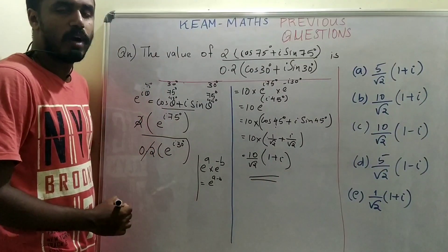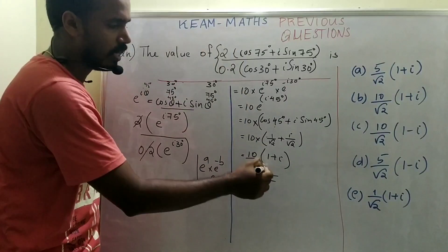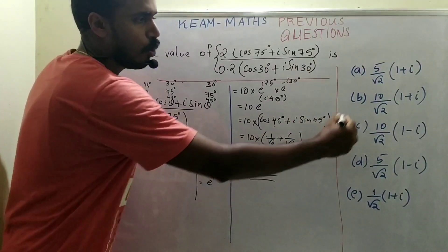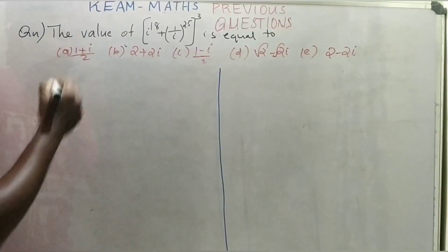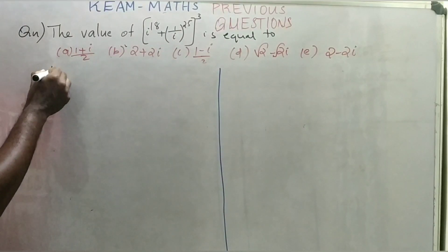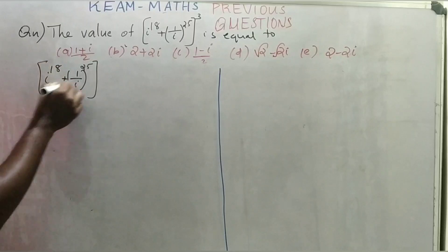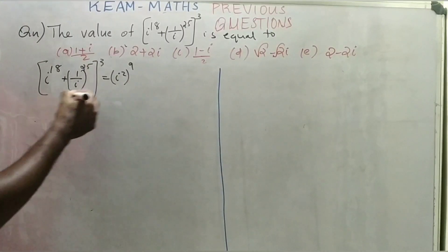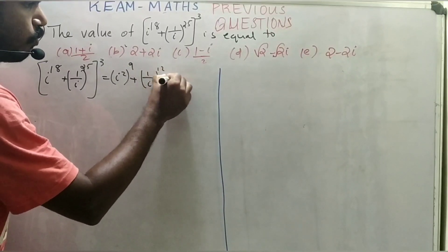Moving on to the next question: the value of (i^18 + 1/i)^25, the whole cube. We write i^18 = (i²)^9 and 1/i = 1/i^(25·(1/i))... simplifying: (i²)^9 + (1/i²)^12 · (1/i).